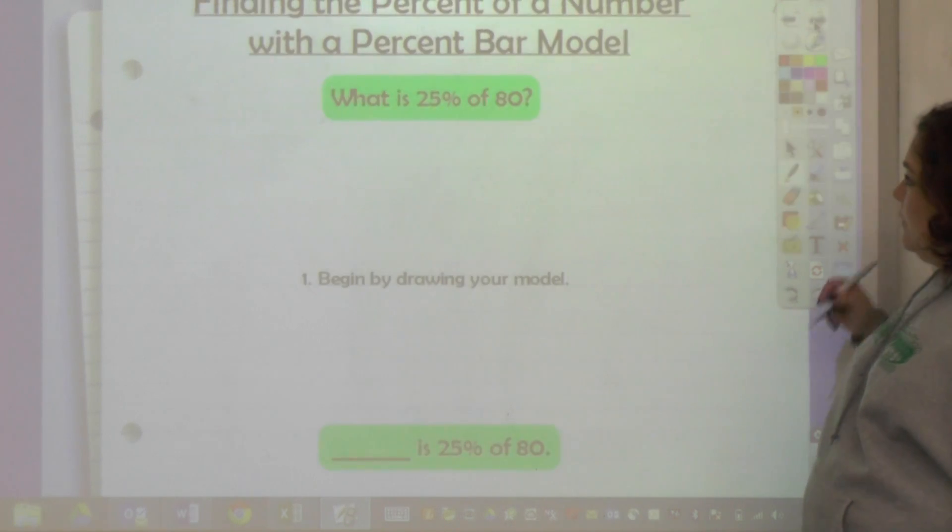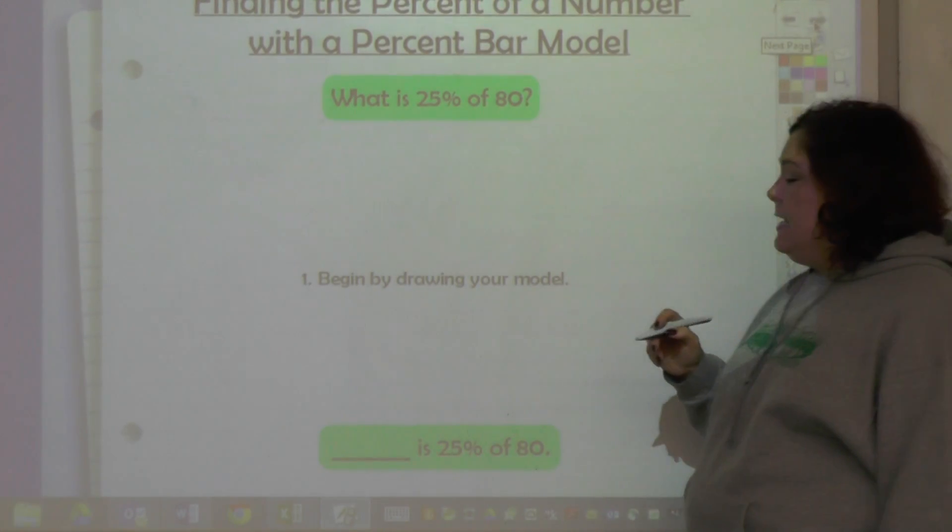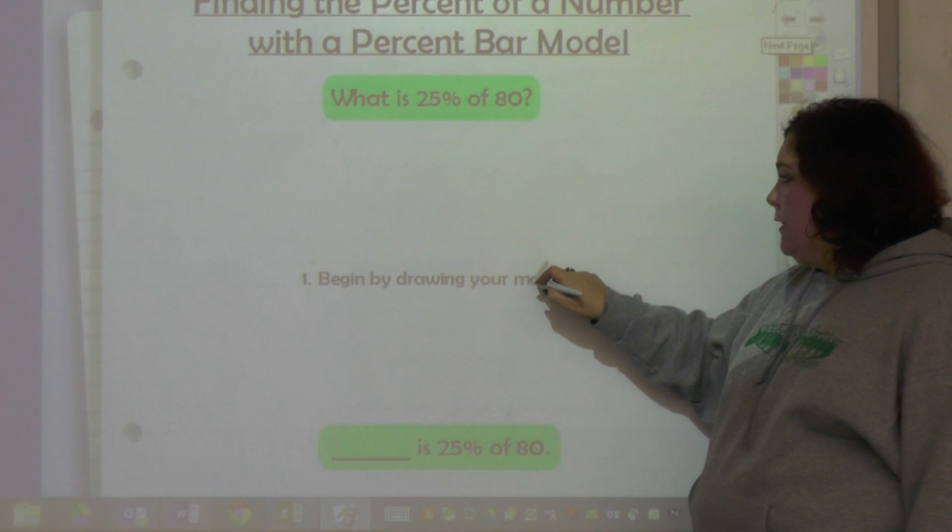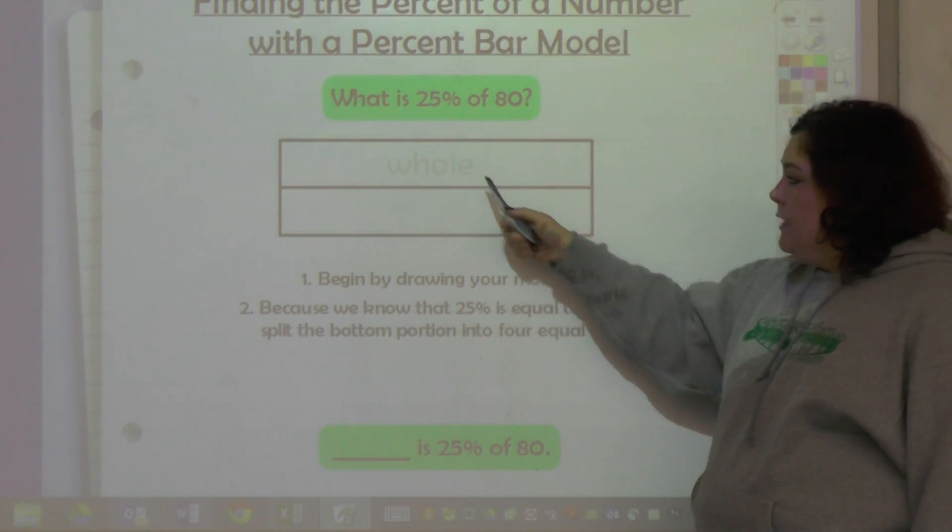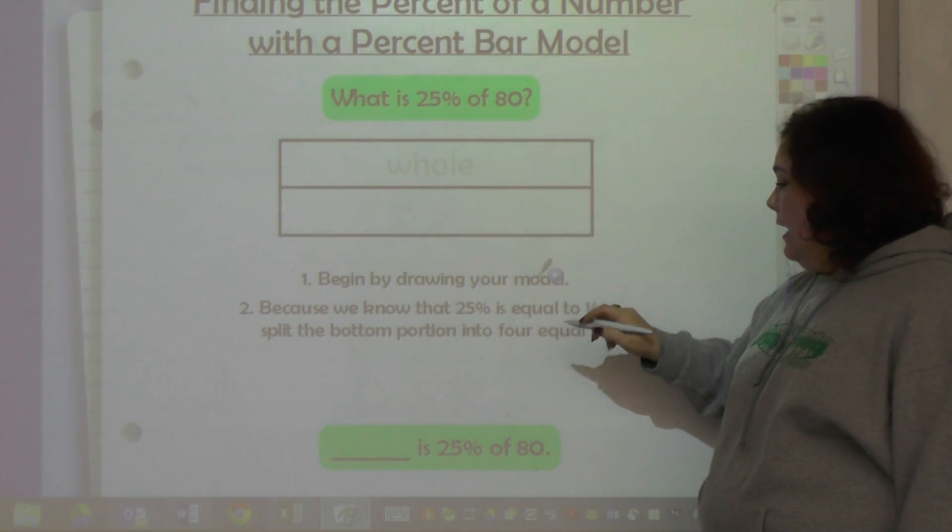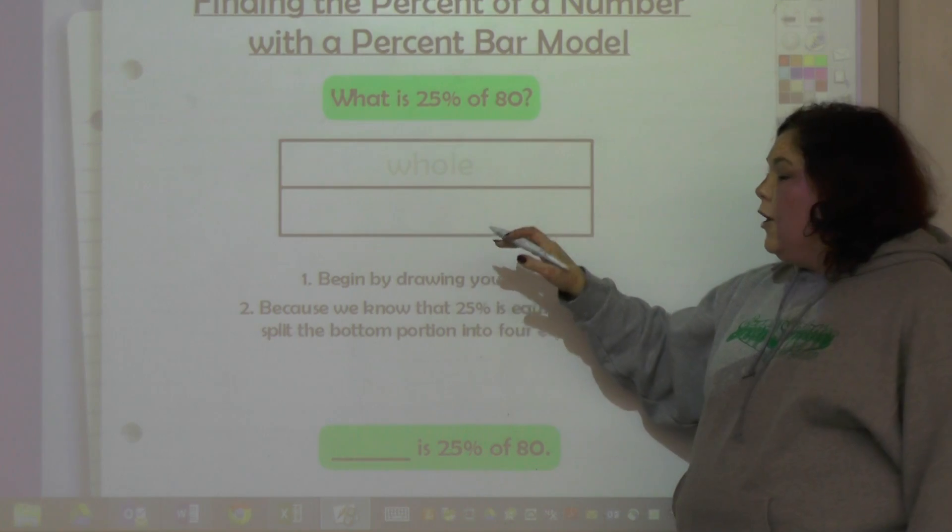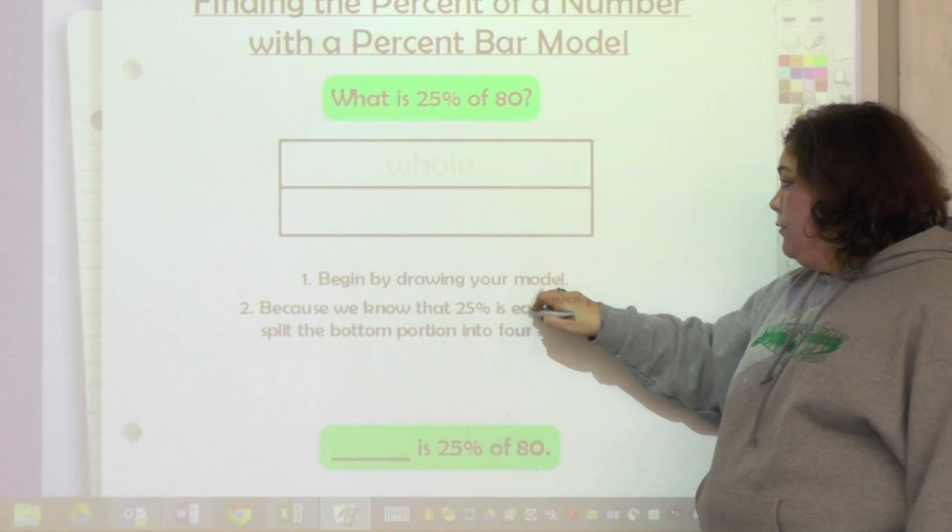So finding the percent of a number with a percent bar model - it says what is 25% of 80? First, we would begin by drawing the model. We would draw a bar or two bars, and this would represent the whole amount. The whole is 80, and 25% we know that that's a fourth, so we would separate it out into four parts.